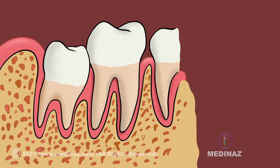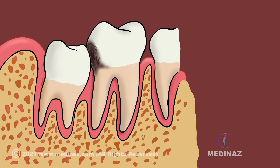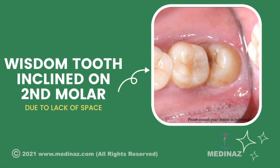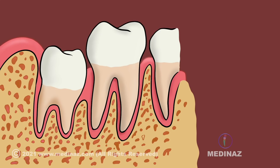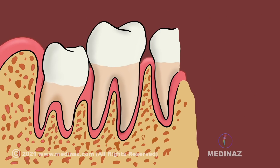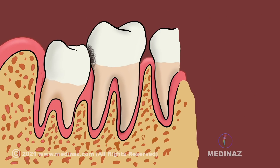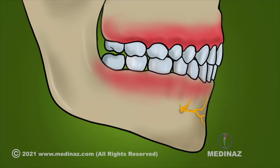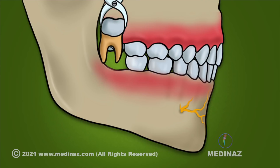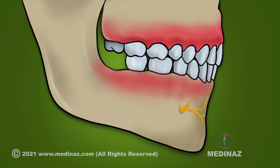The next important reason is when the wisdom tooth is causing damage to a neighboring tooth. Due to lack of space in the jaw, the wisdom tooth may incline on the second molar. This creates pressure and leads to damage or resorption of the associated second molar, and also increases the chances of getting dental caries. So here, as the second molar is more important than the third molar, it is always better to extract the wisdom tooth.